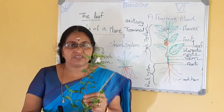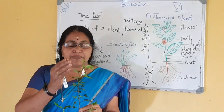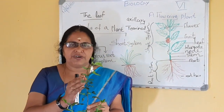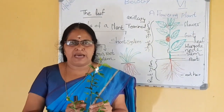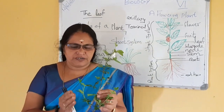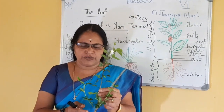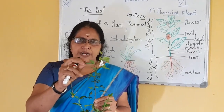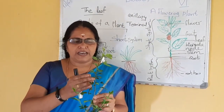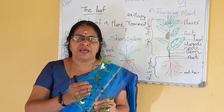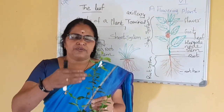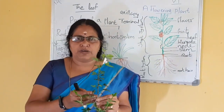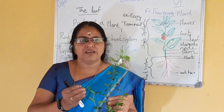What are the functions of the stem? The stem is the main aerial part of the plant. It bears branches, leaves, flowers, and fruits. It gives support to the plant. It transports water and minerals absorbed by the root to the upper parts of the plant, and it also transports the food prepared by the leaf to the lower parts of the plant. The leaf prepares food during the daytime, and that prepared food is transported to the lower parts through the stem.